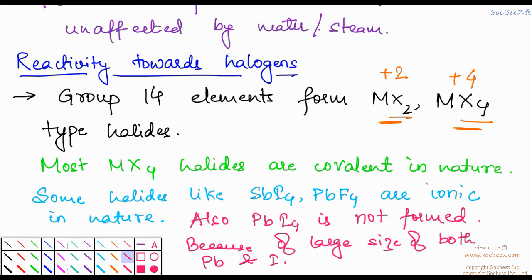With this, I am done with the chemical properties of group 14 elements. In the next video, I will tell you about the anomalous behavior of carbon. Just as in any group the first element shows anomalous behavior compared to the others — I told you about the anomalous behavior of boron in group 13 — similarly in group 14 I will tell you about the anomalous behavior of carbon. That's all for this video.